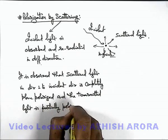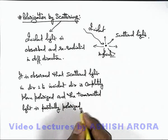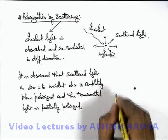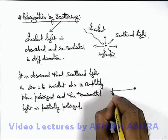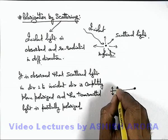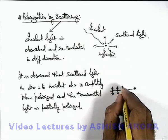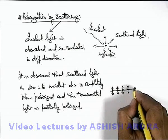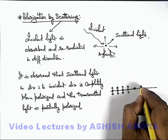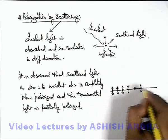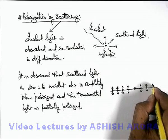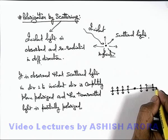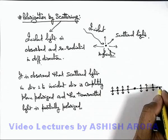The transmitted light is the one which is in the direction of incident light. We can understand this with the help of a diagram. Say if this is an atom or molecule on which light is incident — which consists of all the vibrations in the plane of incidence as well as perpendicular to the plane of incidence — the transmitted light is partially polarized, consisting of some vibrations in the plane of incidence and some in the direction perpendicular to the plane of incidence.